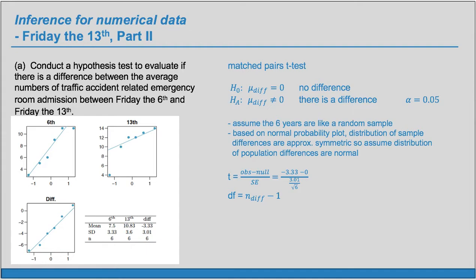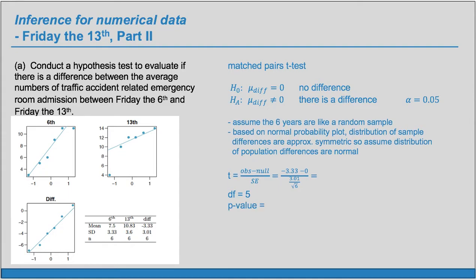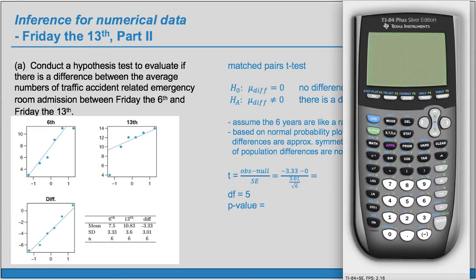Our degrees of freedom is the number of differences minus 1, so in this case that's going to be 5. Now we can evaluate the t-statistic and find the p-value. I'll just use a TI calculator here. I'll go to stat, tests. This is like a one sample test on the differences, so we're just going to choose number 2, which is t-test. I have the stats, not all the data, so I'll go over to stats and hit enter. The null value is 0. The observed average is negative 3.33. The standard deviation there for the differences is 3.01, and n is 6. I have a two-sided alternate.